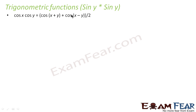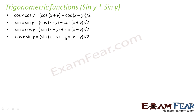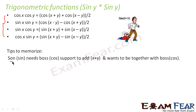We will see some trigonometric functions of the form sin x · sin y or cos x · cos y. When you have cos x · cos y, this becomes [cos(x+y) + cos(x-y)] / 2. Similarly, sin x · sin y can be written as [cos(x-y) - cos(x+y)] / 2. For sin x · cos y, it is [sin(x+y) + sin(x-y)] / 2. For cos x · sin y, it is [sin(x+y) - sin(x-y)] / 2. It's a bit confusing, so let's use a mnemonic tip.